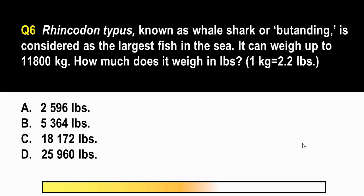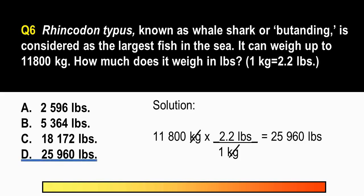The correct answer is letter D, 25,960 pounds. So here we use the conversion factor, 1 kilogram is equal to 2.2 pounds to get the equivalent of 11,800 kilograms in pounds. So paano ba yung gagawin natin dito? We just multiply 11,800 kilograms times 2.2 pounds over 1 kilogram. Kailangan natin ilagay si kilograms sa denominator para mag-cancel out si kilogram. So kilogram here divided by kilogram is just equal to 1, leaving us with only pounds. And we just do the arithmetic. 11,800 times 2.2 divided by 1 is equal to 25,960 pounds.